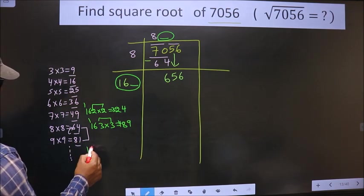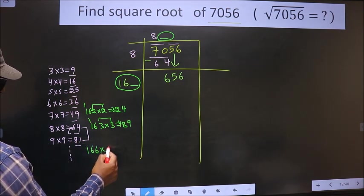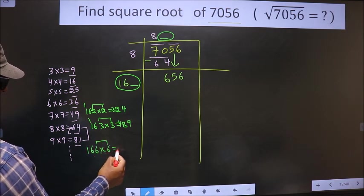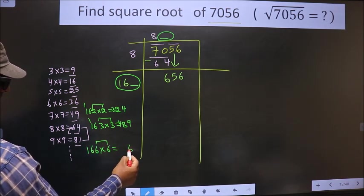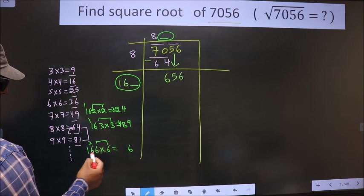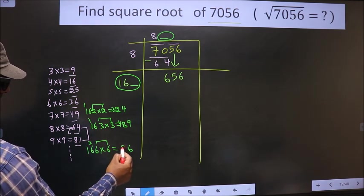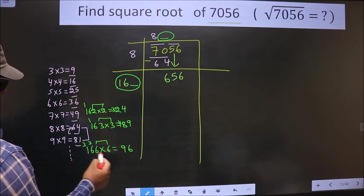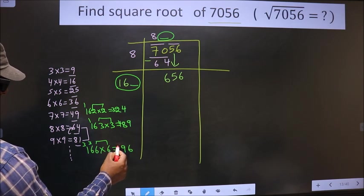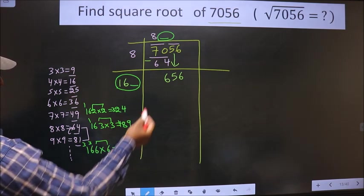If I take 6. These two same. 6 into 6 is 36. 6 into 6 is 36 plus 3 is 39. 6, 1, 6 plus 3 is 9. So this is exceeding this.